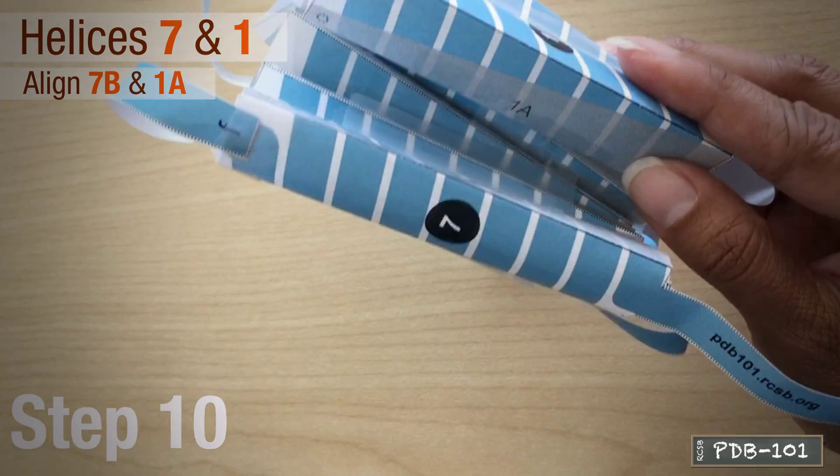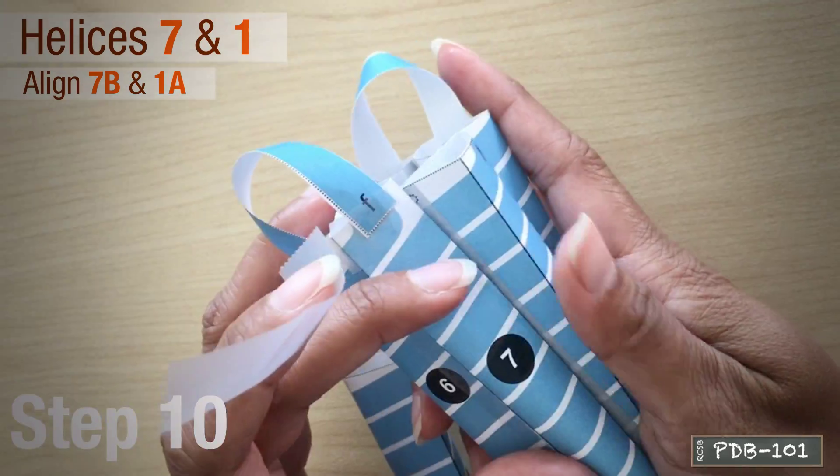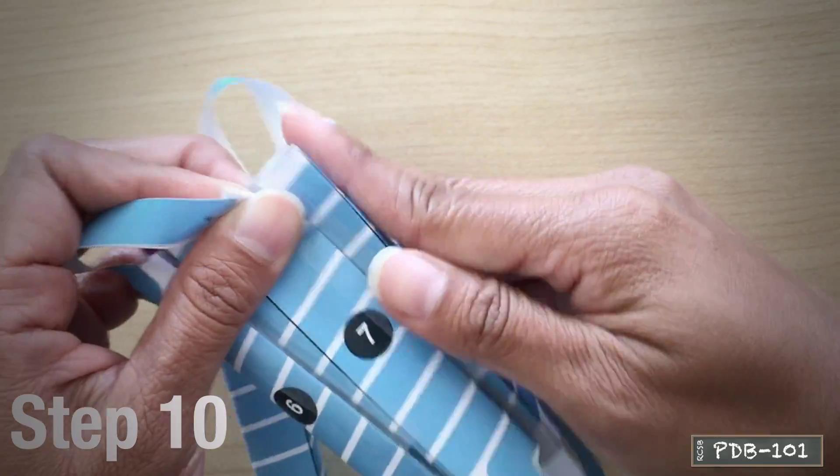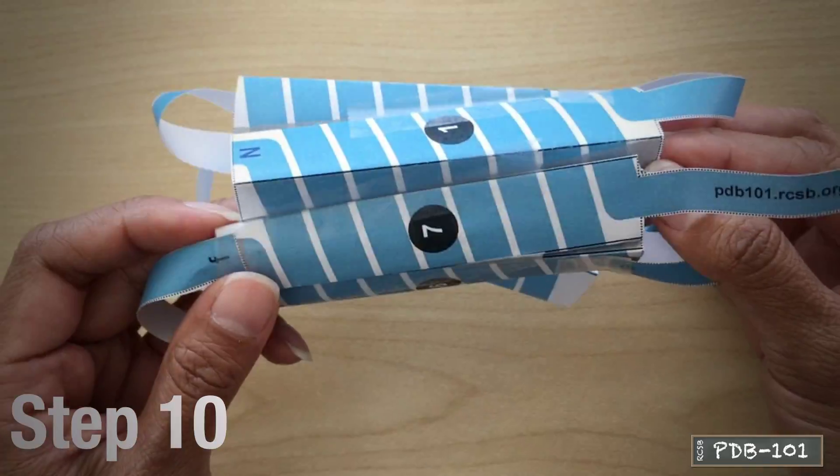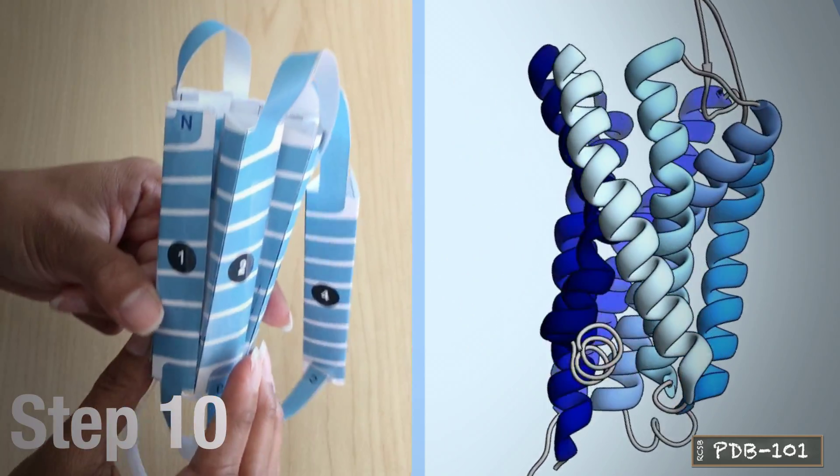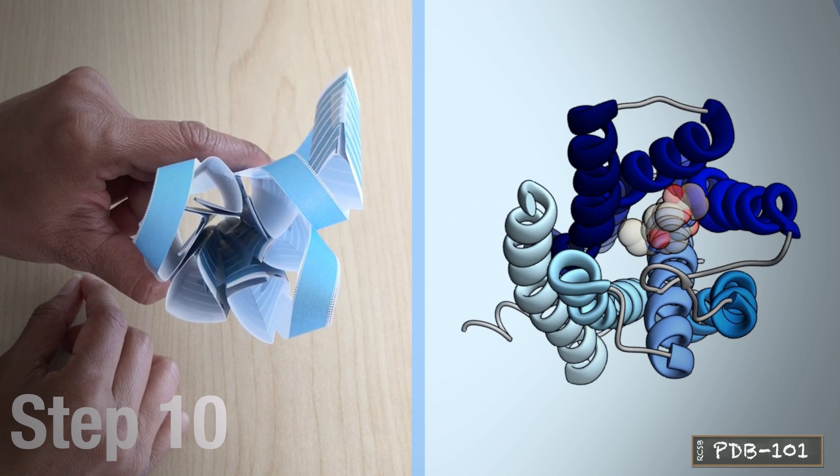Connect helices 7 and 1. Be sure to align the semi-transparent gray area between 7B and 1A, and match the positions of the sun symbol. Now you will notice the cavity at the top that represents the ligand binding site.